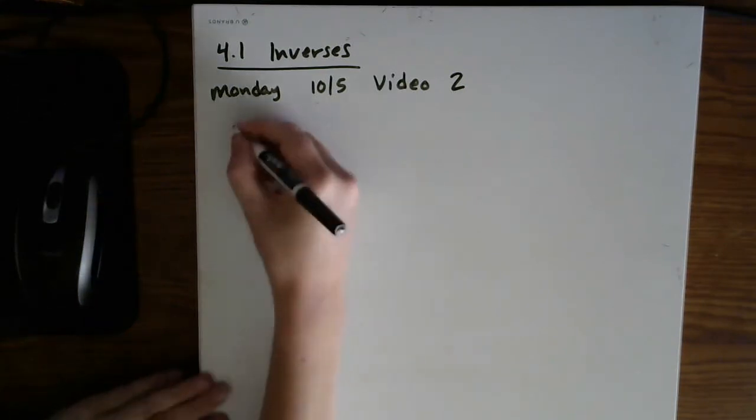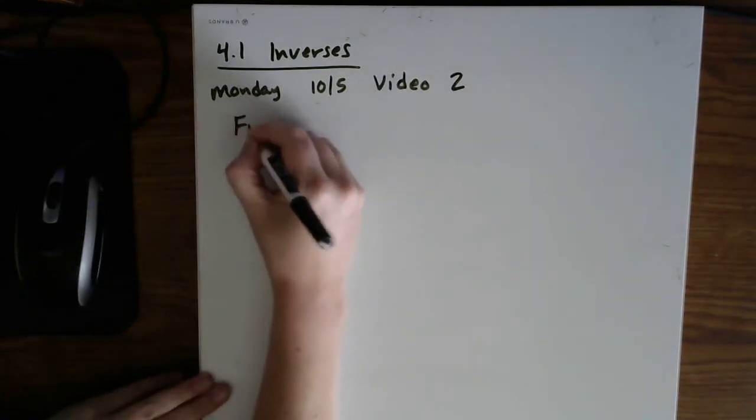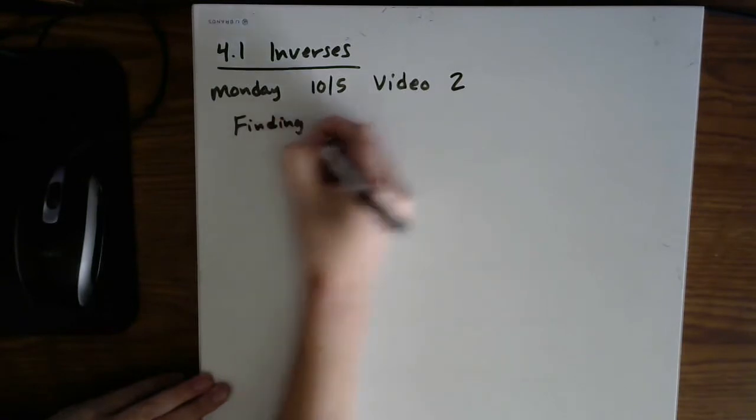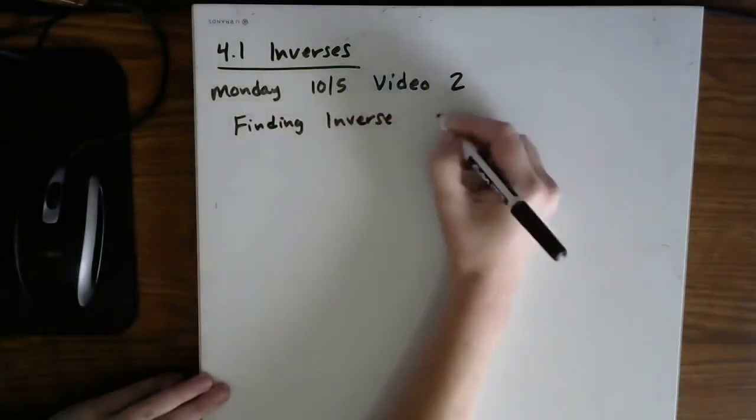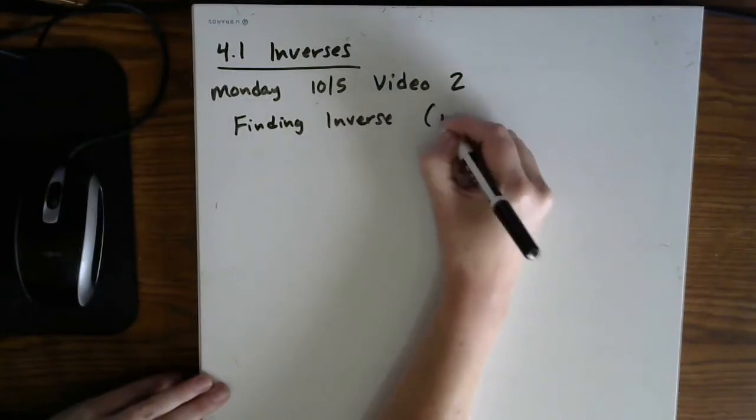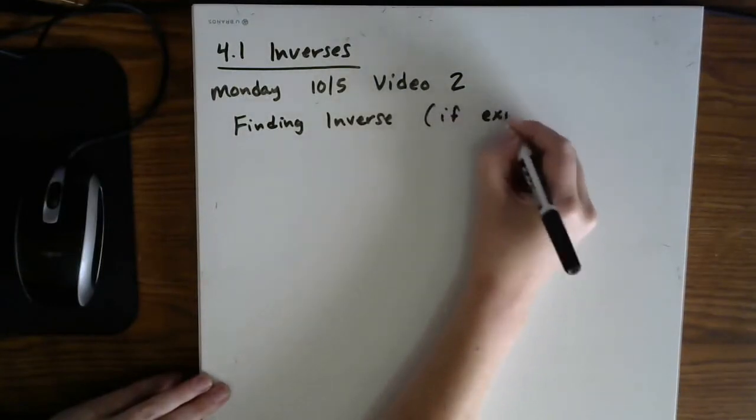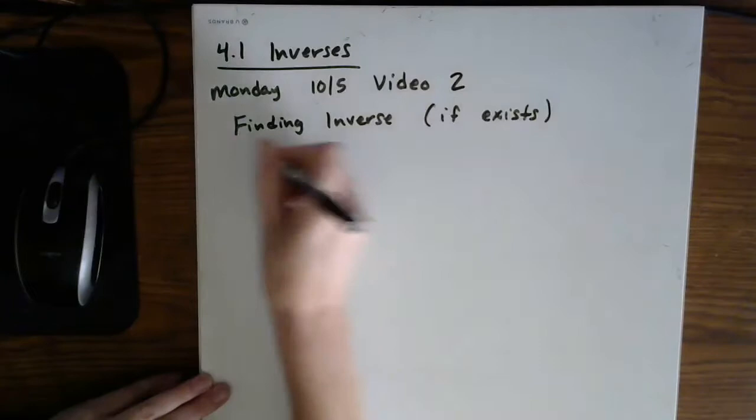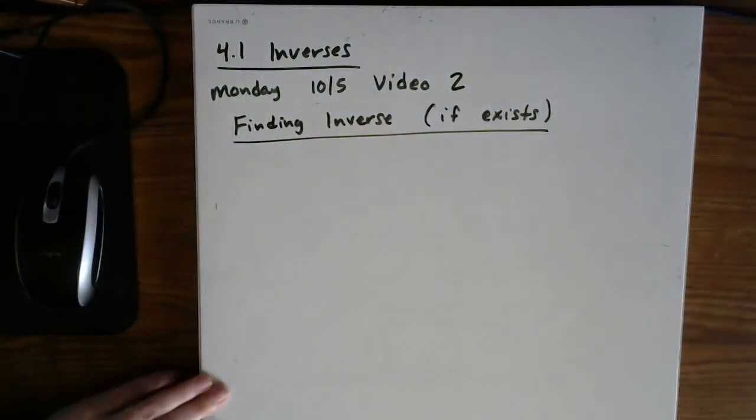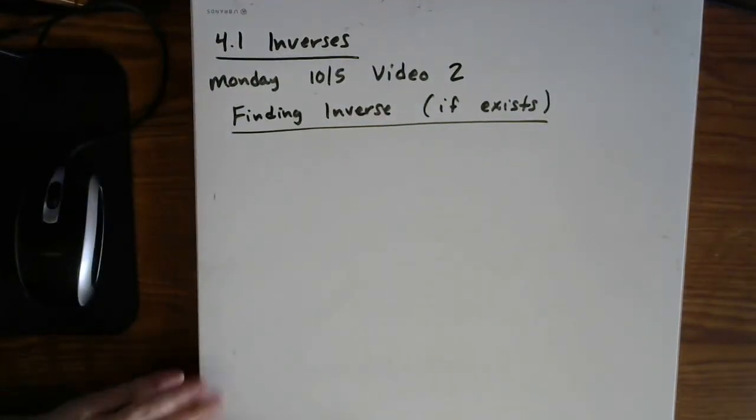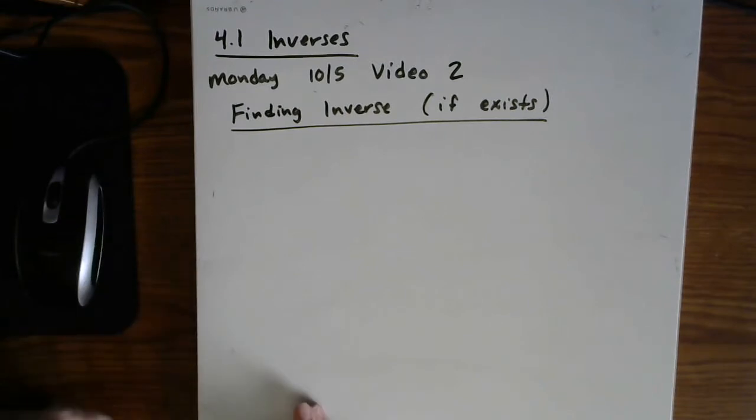But we also need to talk about how you find them. So finding an inverse, and let's be more specific, they don't always exist. So if one of them exists, there is a sequence of steps that you can go through. And if you do them in exactly this order, it will make finding inverses a lot easier.